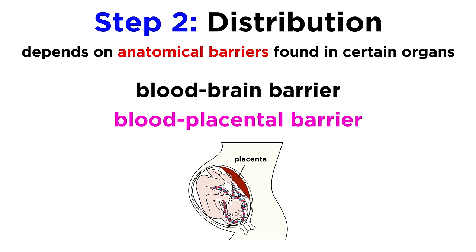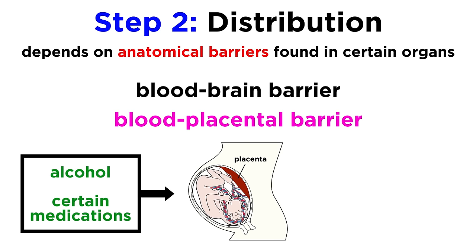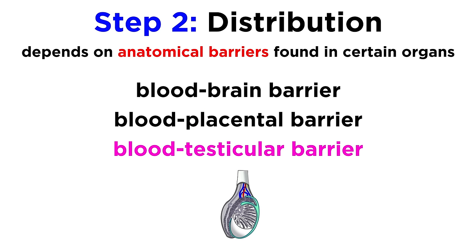There is also the blood-placental barrier that regulates which substances can pass from the bloodstream of a pregnant woman into the fetus. However, a number of substances that are able to pass through this barrier can still do harm to the fetus, such as alcohol and certain medications. And then there is the blood-testicular barrier, which prevents many substances from reaching the male testes, therefore making disorders of the testes difficult to treat.